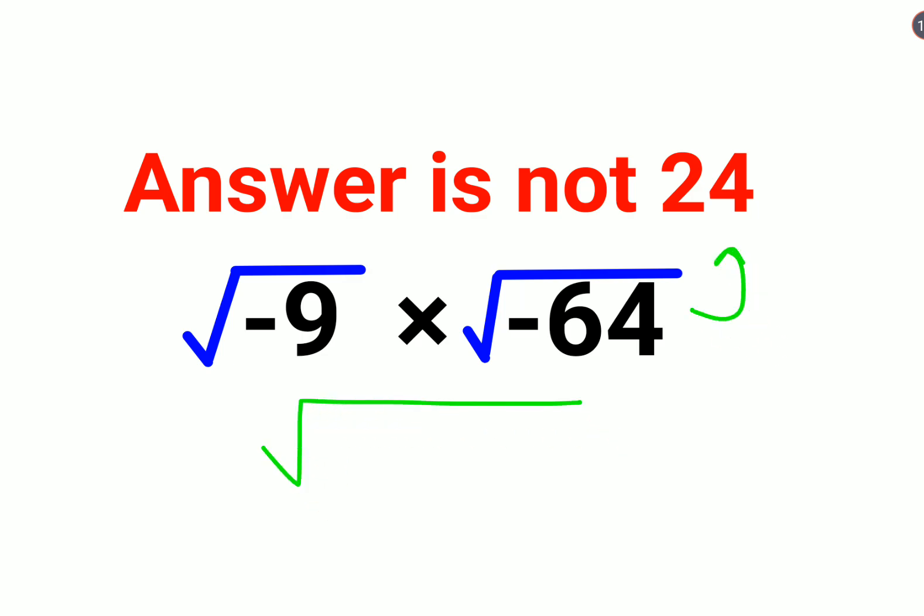The reason being they did everything under the rule. So √(-9) × √(-64), and that basically gets you root of 576, because negative into negative is positive. That's what we have been taught till now.